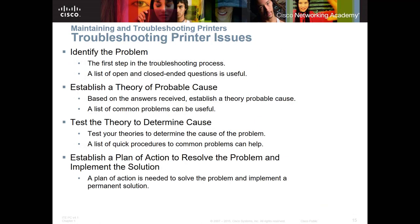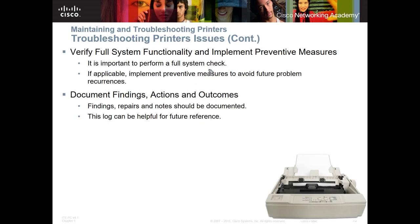Let's look at troubleshooting printer issues. This is a process we keep revisiting because it's important. You want to: identify the problem, establish your theory and probable cause, test that theory, establish your plan of action, verify that full system functionality has been restored, implement preventative measures, and document your findings. Document your findings — I said that three times because you want to document what happens so the next person, or you yourself, don't have to try to remember. Document the outcome so that next time it can be repaired or fixed easily.